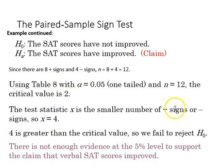The test statistic x is the smaller of the plus or minus signs, so in this case it's 4. Four is greater than 2, so we fail to reject the null. So there's not enough evidence at the 5% level to support the claim that the verbal SAT scores improved.